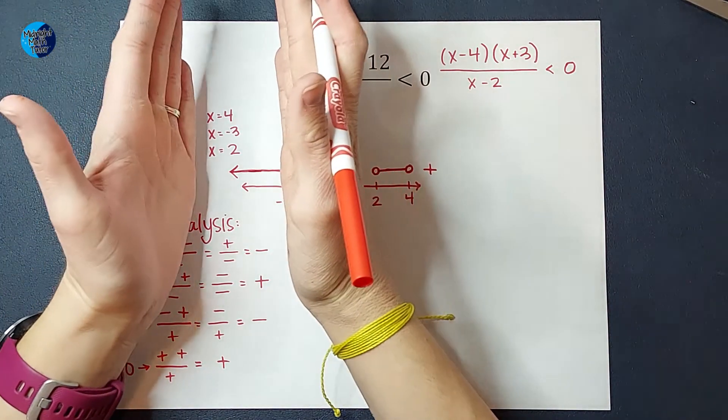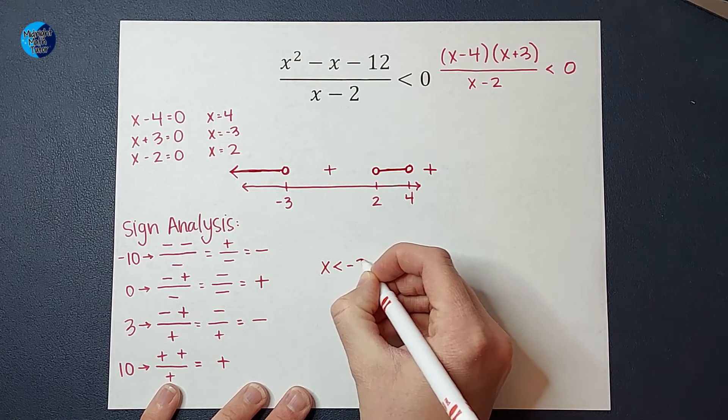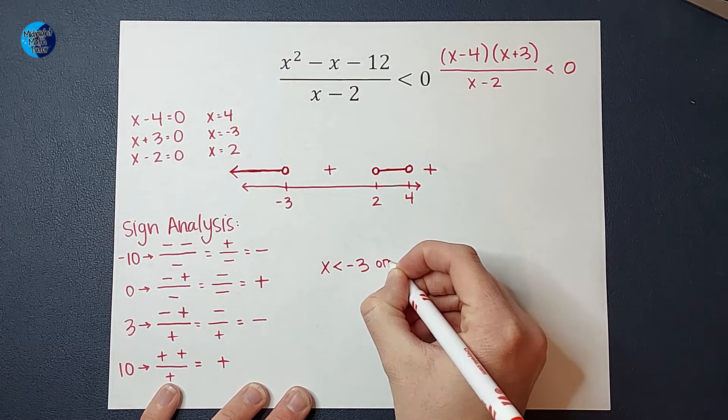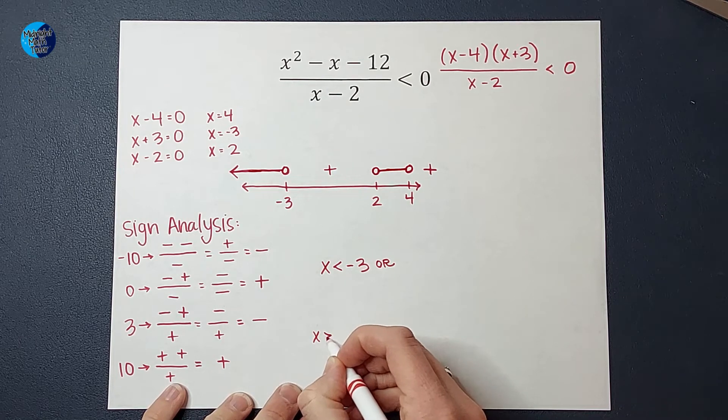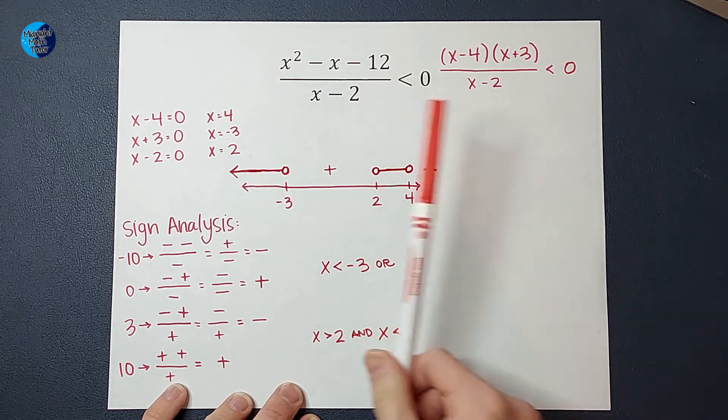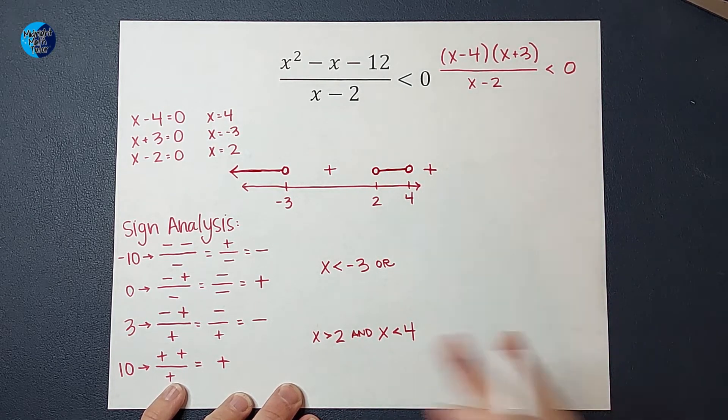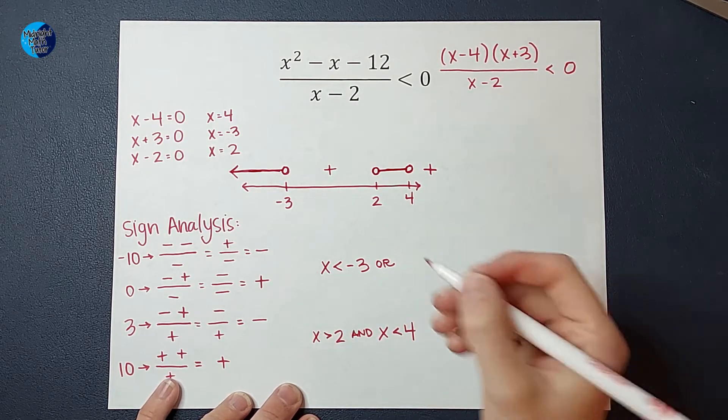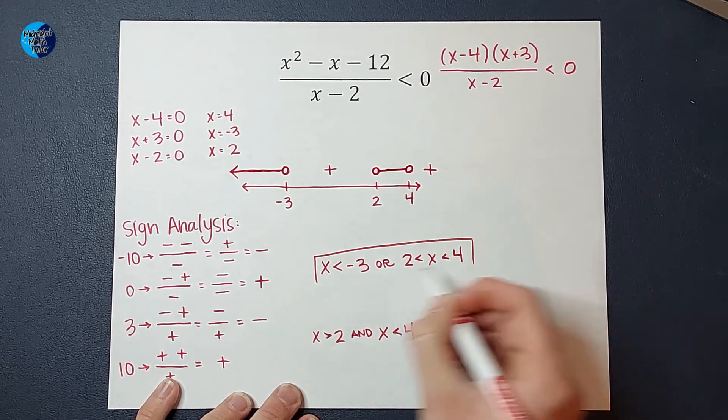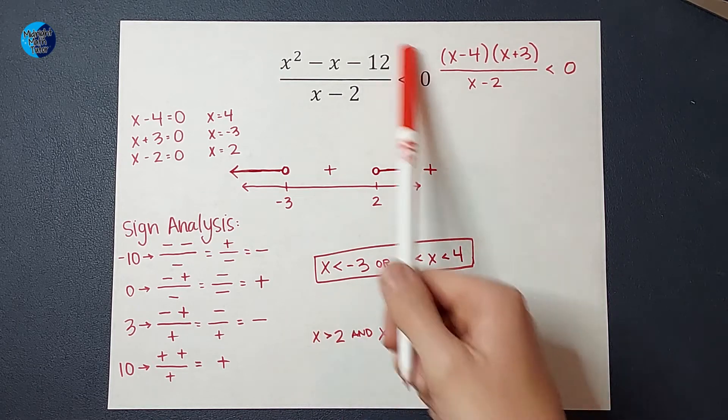Your teacher probably wants your answer written either as an inequality or interval notation. So we want to show an inequality that represents both of these. I would say x < -3, not equal to because it's an open circle, or x can also be greater than 2 and less than 4. It needs to be greater than 2 and less than 4. I can also write it with just one x like this: 2 < x < 4. That is my answer written in inequality form.